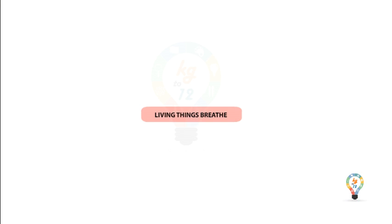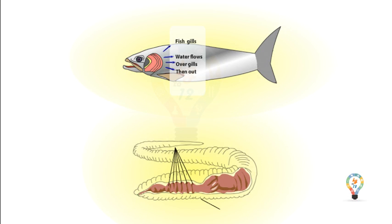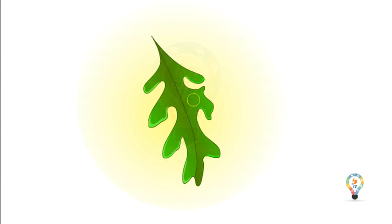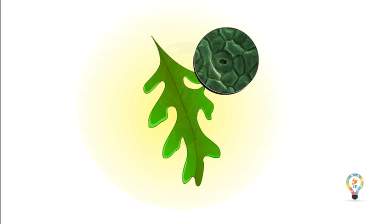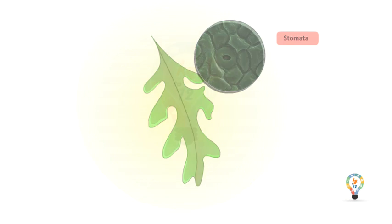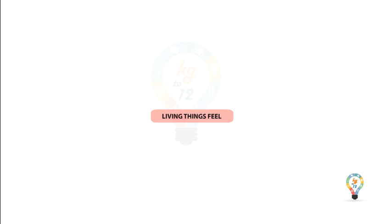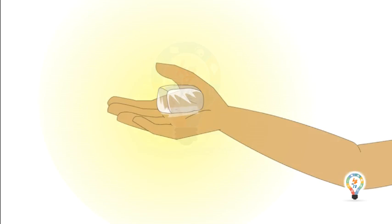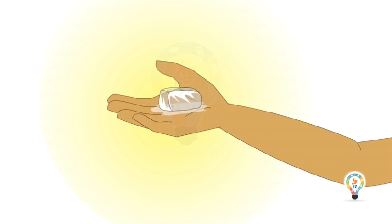Living things breathe. All living things need air to breathe. Some animals breathe through their special organs. For example, fish have gills to breathe, earthworms breathe through their skin, and plants have tiny pores called stomata for respiration.